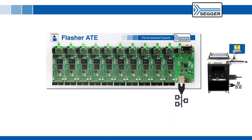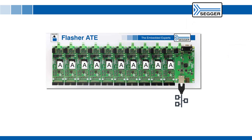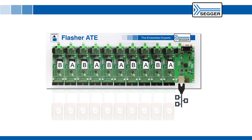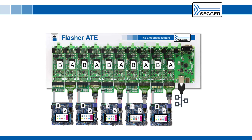Once set up, the main module receives commands via Telnet or RS-232 and distributes them to the attached programming modules. The Flasher ATE is capable of programming up to 10 target devices in parallel. These devices could all be the same or part of a multi-device system.